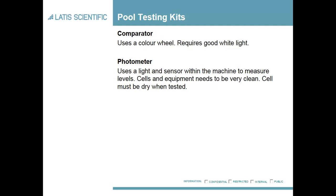A photometer uses a light within the machine at a controlled level. These need extremely clean cells — any scratches, residues, or marks on the cells will affect the extraction or absorption of the light. You can actually get a skewed reading because your standard cell will give a baseline, whereas the ones you're using with the DPD or reagent will have residue in them.